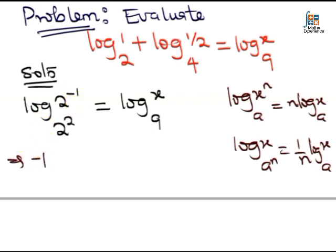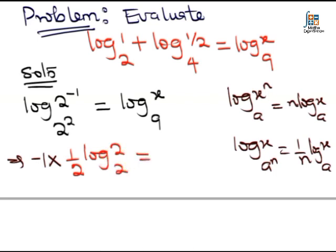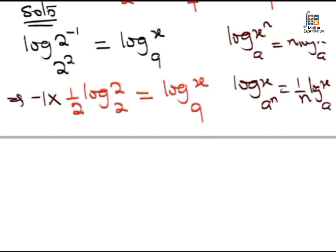the minus one will come to the back and then this other two will come to the back. When it comes, it will multiply this; however, it will come as one over two. And this is log two base two to be equal to the log of x to the base of nine. Why did we do